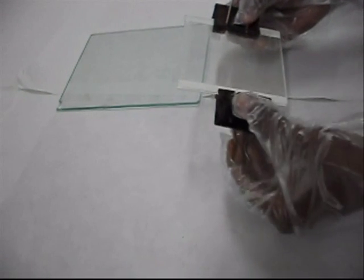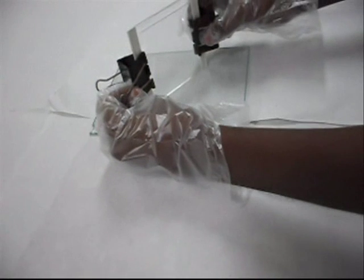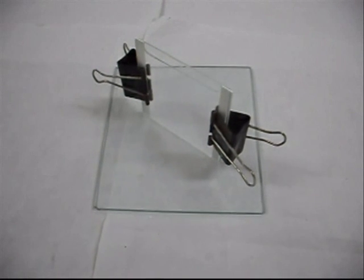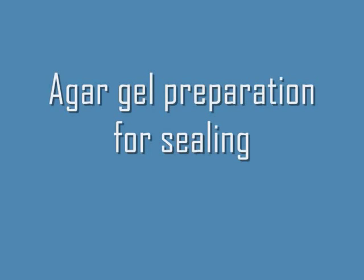Hold the assembly together with bulldog clips and then place it in a base plate. The agar is to be mixed well with water. It should be in the form of gel for better sealing.